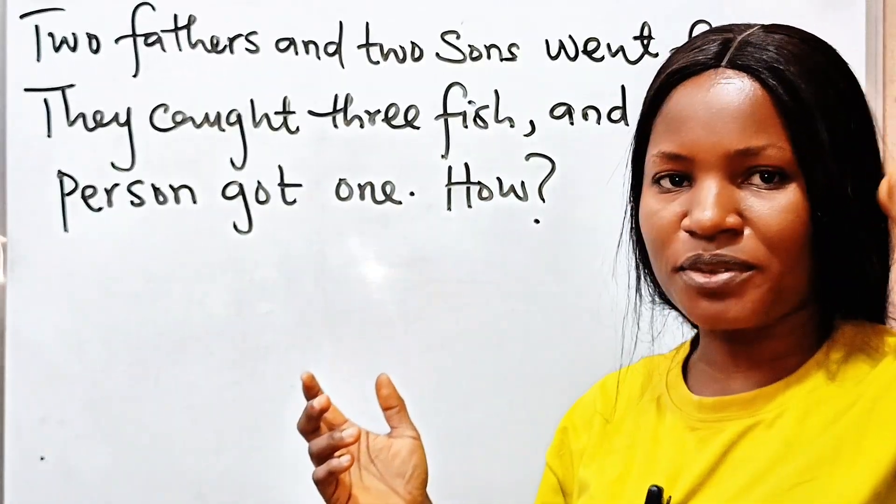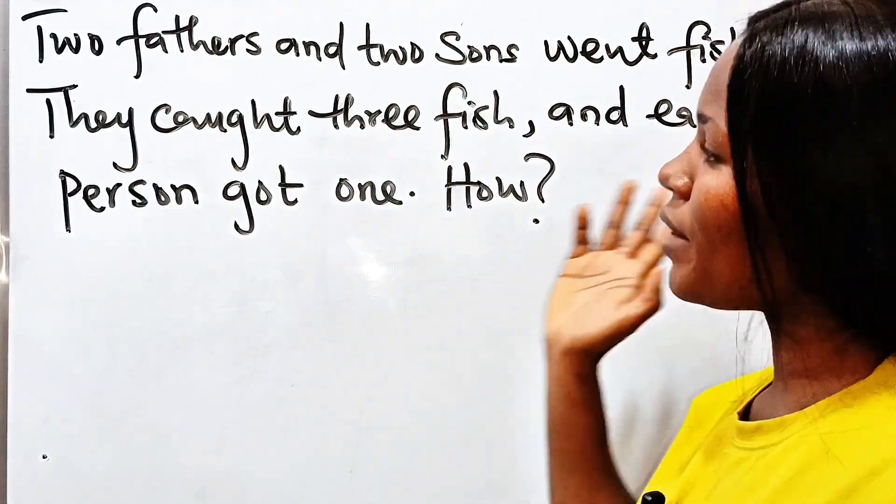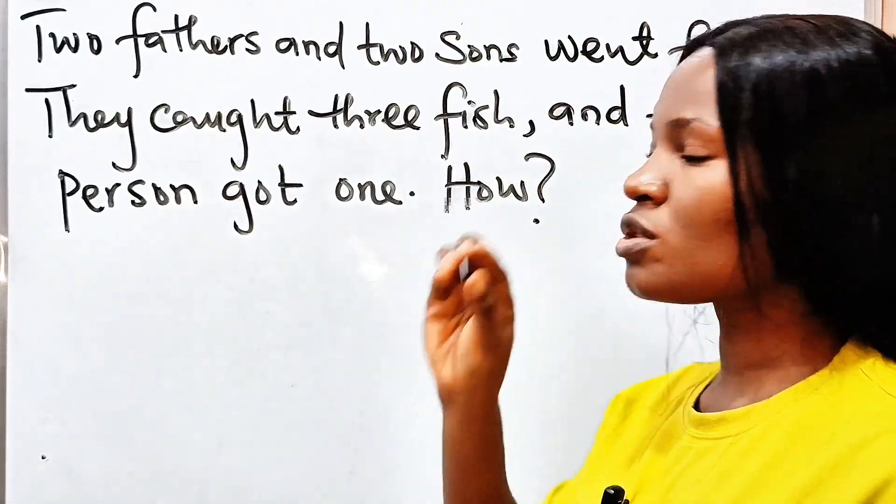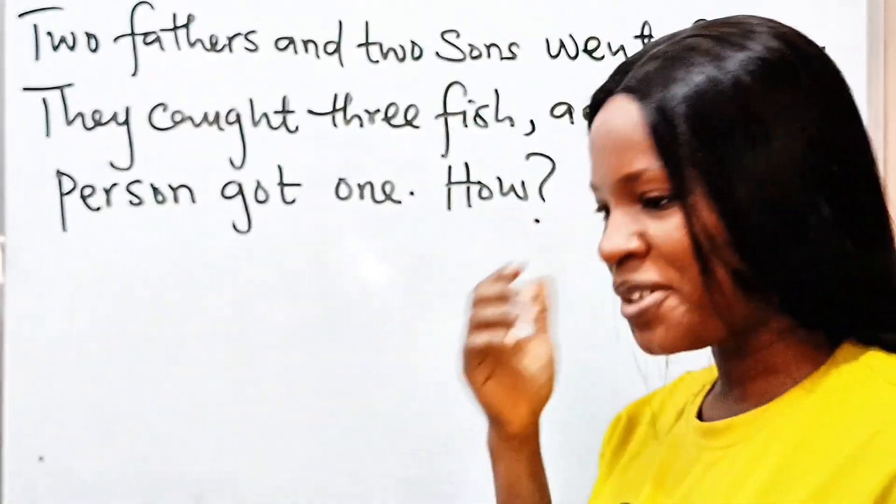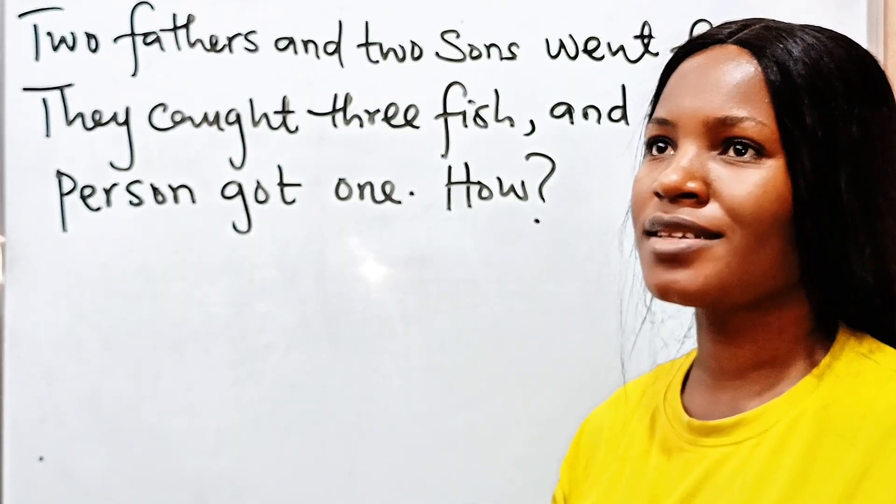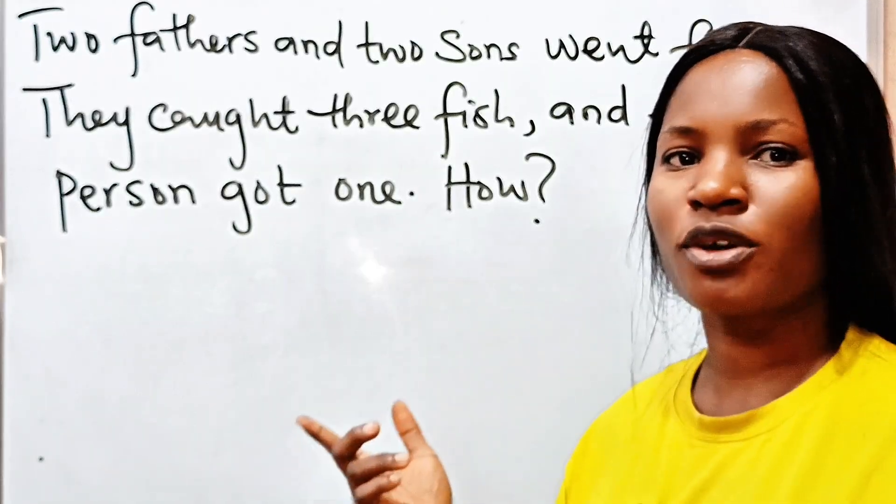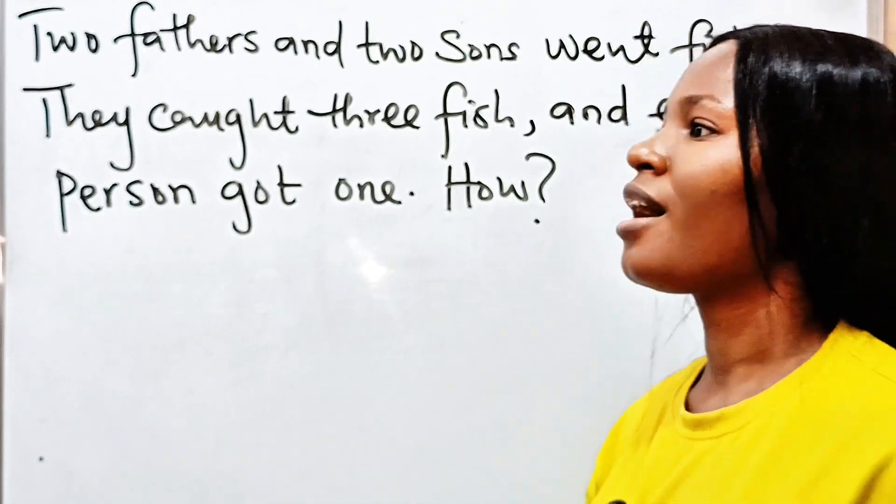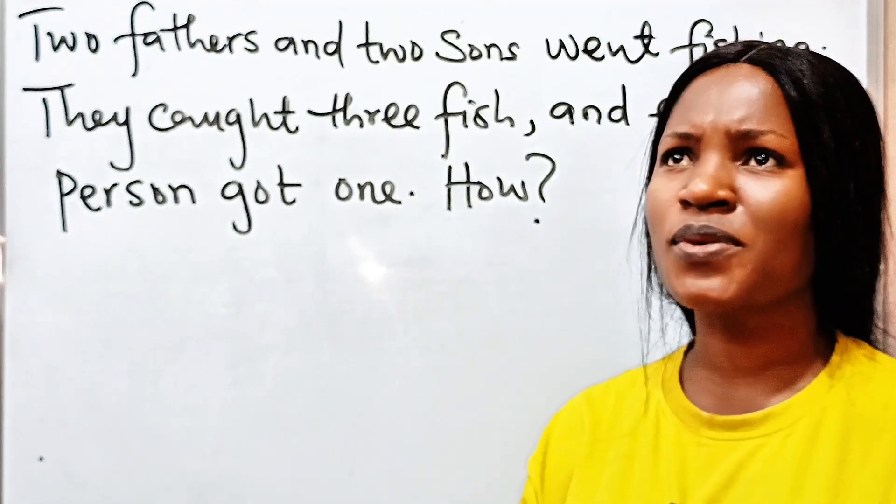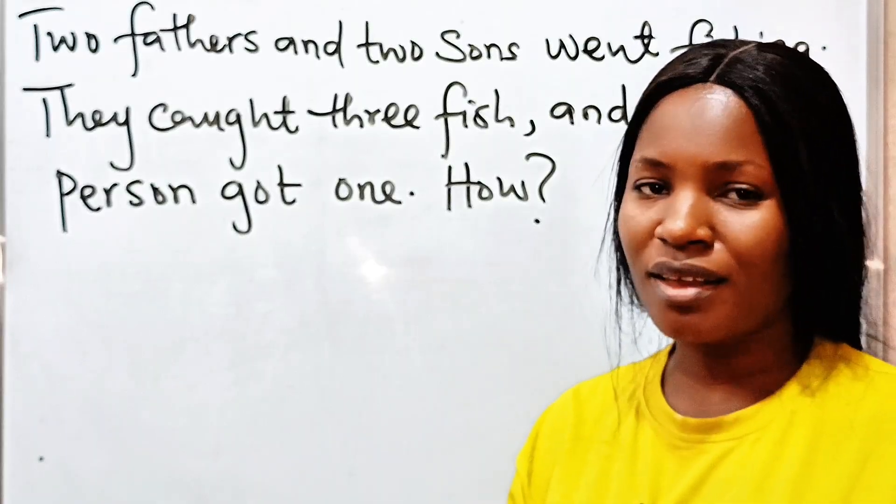This is the second IQ question. Now, this question says, 2 fathers and 2 sons went fishing, they caught 3 fish, and each person got one. How? When I saw this question, don't mind me, this is exactly how I laughed at myself. Because I was like, it's either I am crazy, or the person that set this question is crazy. But that question is there, meaning that the person that set the question is actually sure of what he or she wrote. So that is when I decided to take a second look at this question, and tried to read meaning into that.